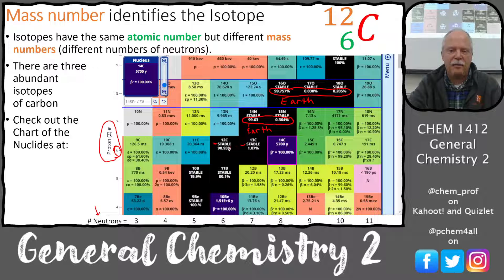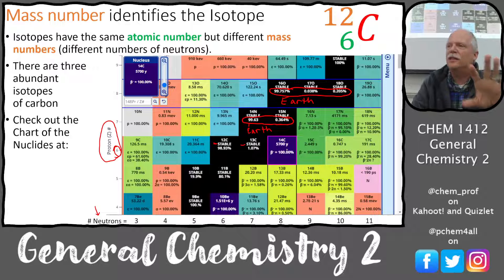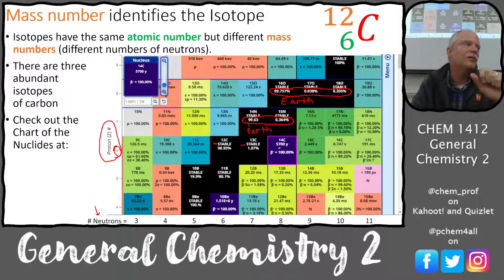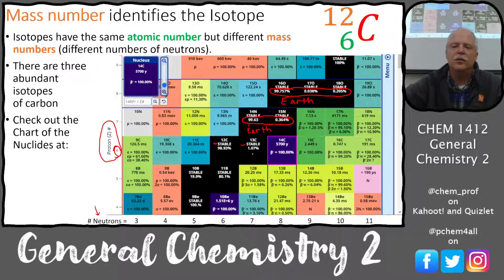Carbon-12 and carbon-13 account for nearly 100% of natural carbon. Carbon-14 is made in the upper atmosphere and is radioactive — we'll see how that happens in a later lecture. Those are the two stable isotopes: carbon-12 and carbon-13. Carbon-14 is not stable but is constantly regenerated by the sun.